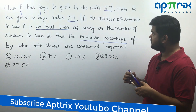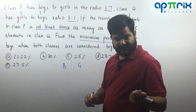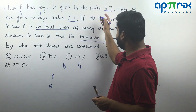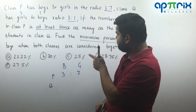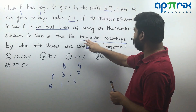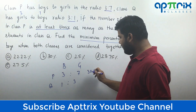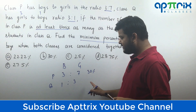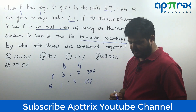Let us set up a table with boys and girls for class P and class Q. In class P, boys to girls ratio is 3:7, so I write 3 and 7. In class Q, boys to girls ratio is 1:3. The percentage of boys in class P is 3 out of 10 total, which is 30%. In class Q, it is 1 out of 4 total, which is 25%.